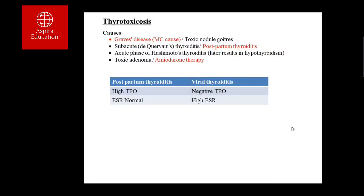The key differential between postpartum thyroiditis and viral thyroiditis is that postpartum thyroiditis — being an autoimmune phenomenon — typically shows high TPO (thyroid peroxidase) antibodies with a normal ESR. In contrast, viral thyroiditis shows high ESR due to significant inflammation, but antibodies are negative.